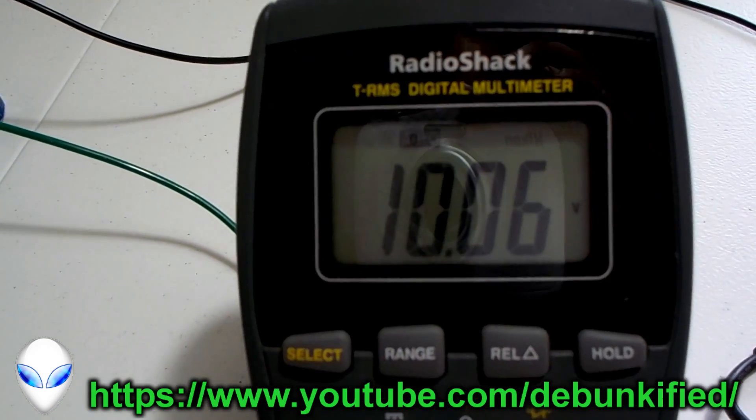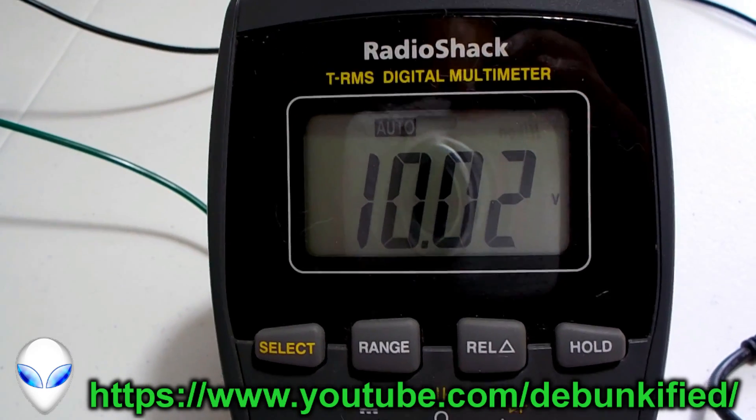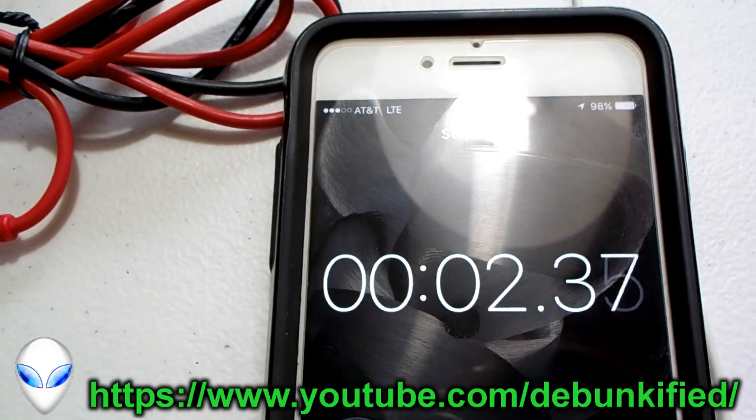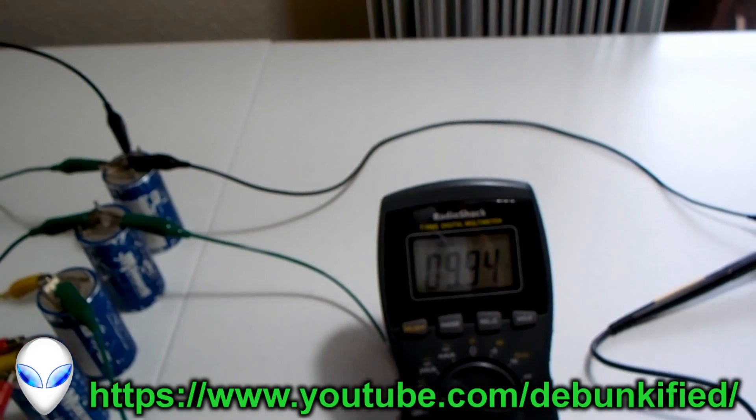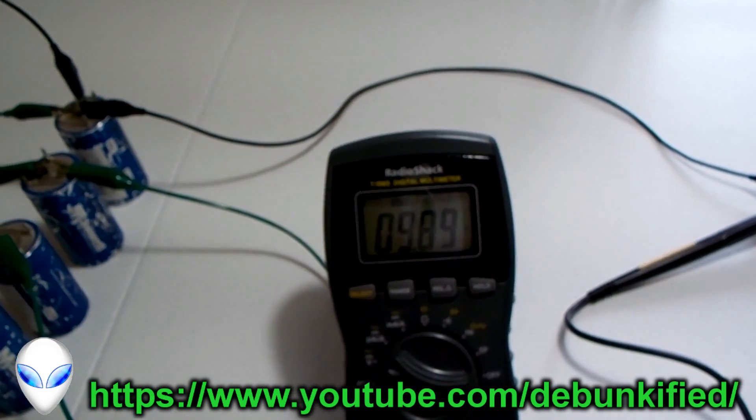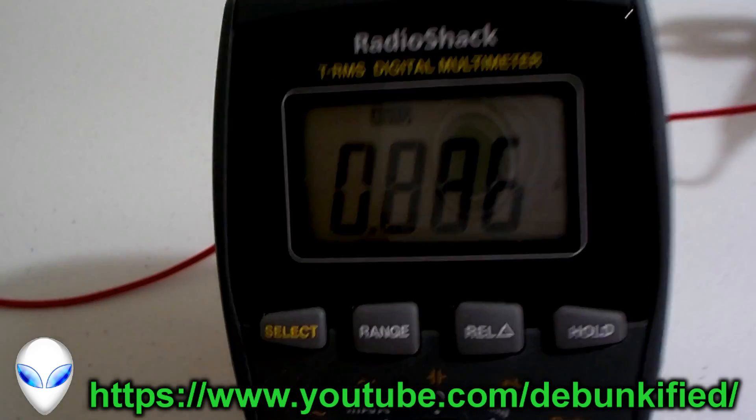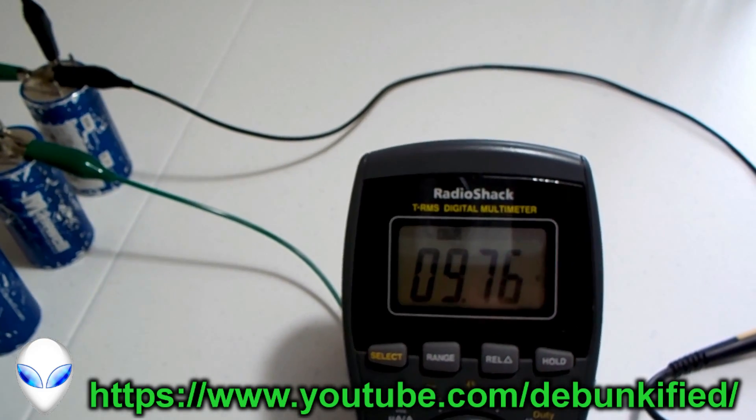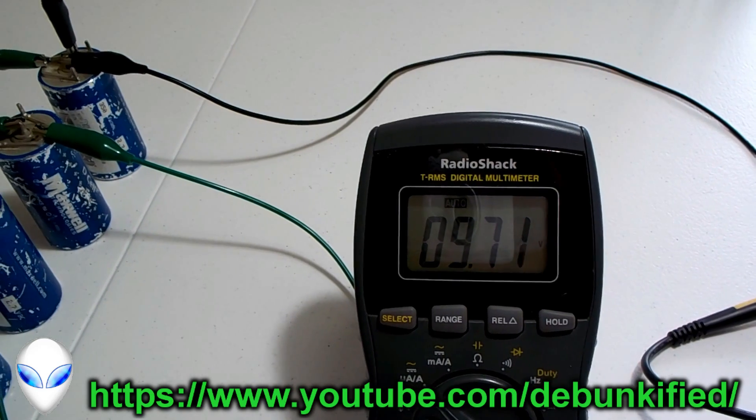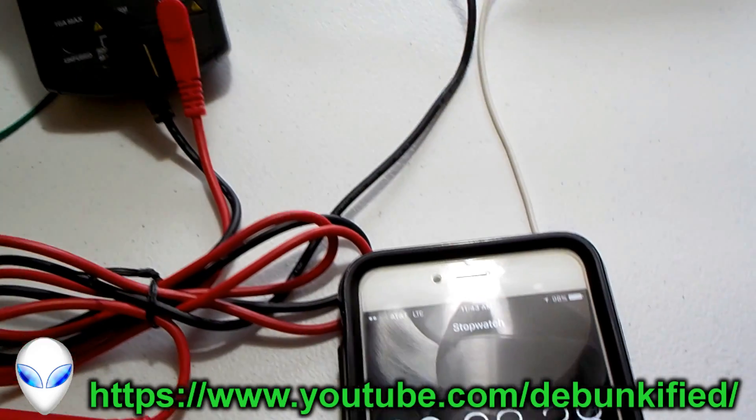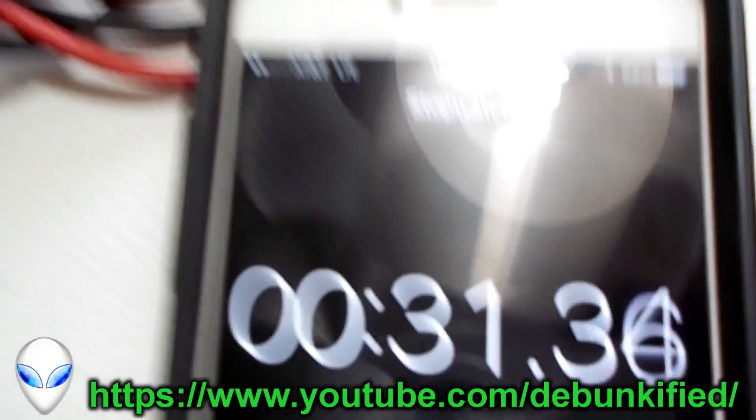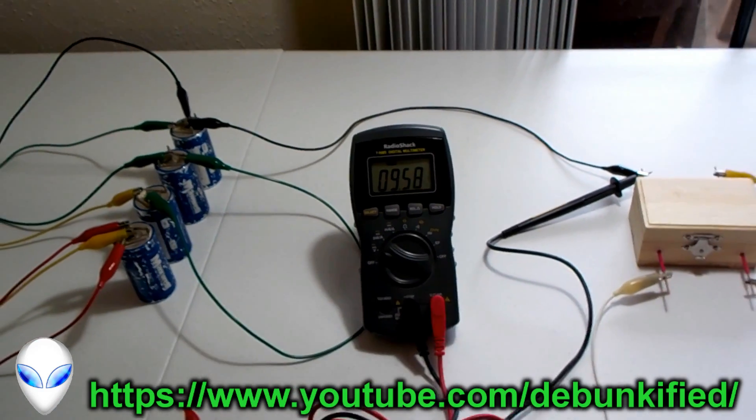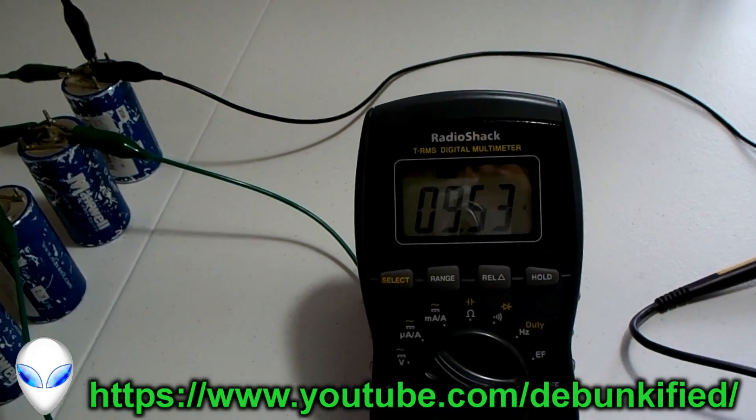If we time this and start it right when it drops to 10 volts, we'll just let this drain down to about 9.50 volts at this rate. Let's drop all the way down starting from 10 volts down to 9.50 volts. We'll time how long that takes.